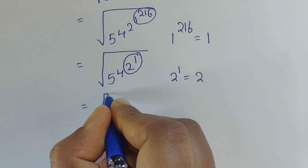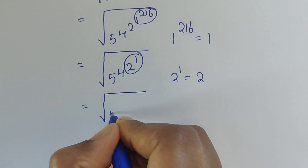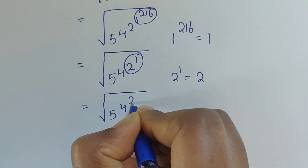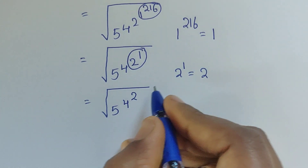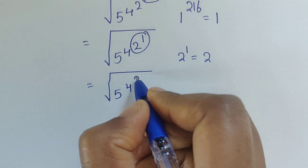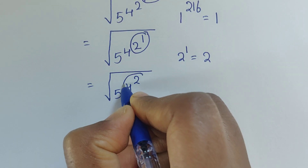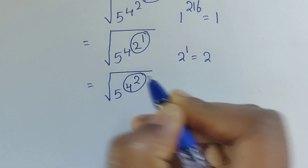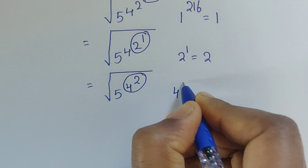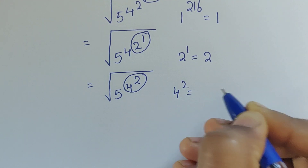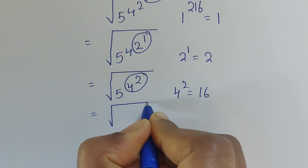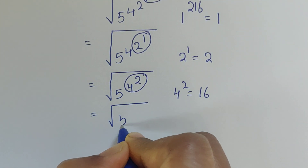Next, 2 to the power of 1 equals 2. So we now have the square root of 5 to the power of 4, times 4 to the power of 2, times 2. Then, 4 squared equals 16, giving us the square root of 5 to the power of 4, times 16, which is the square root of 5 to the power of 16.